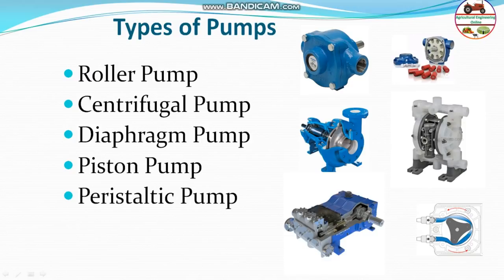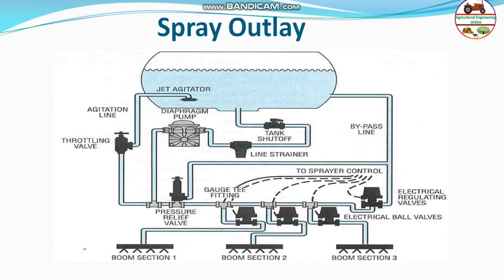Next is the spray outlet — how the sprayer works from start to finish. Starting from the tank, which can be of different types, there is a jet agitator and an inlet to the tank. There is a tank shutoff valve, and the pipe leads first to a strainer, then to the pump.